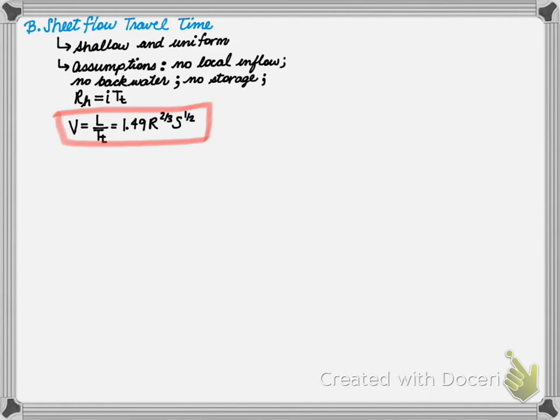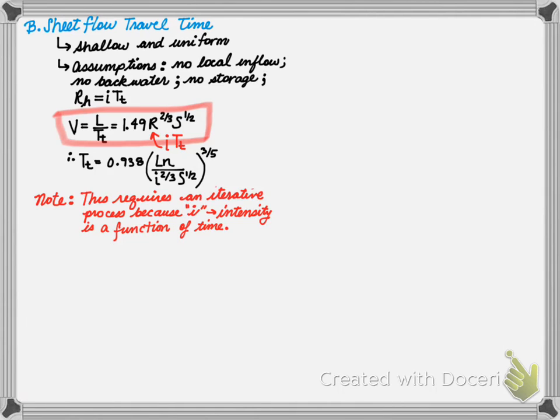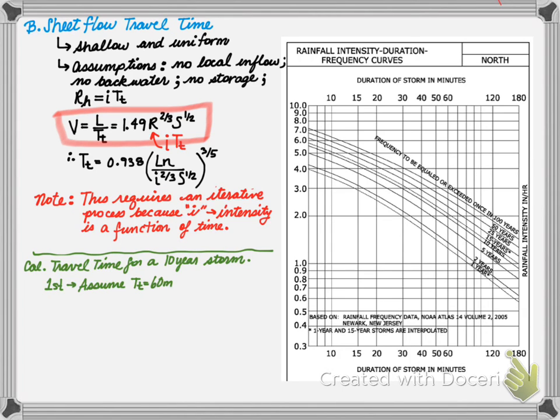Next, we can simplify this equation because we know hydraulic radius is equal to I times the travel time. Therefore, the travel time can be written as follows. Note, this requires an iterative process because I, intensity, is a function of time.